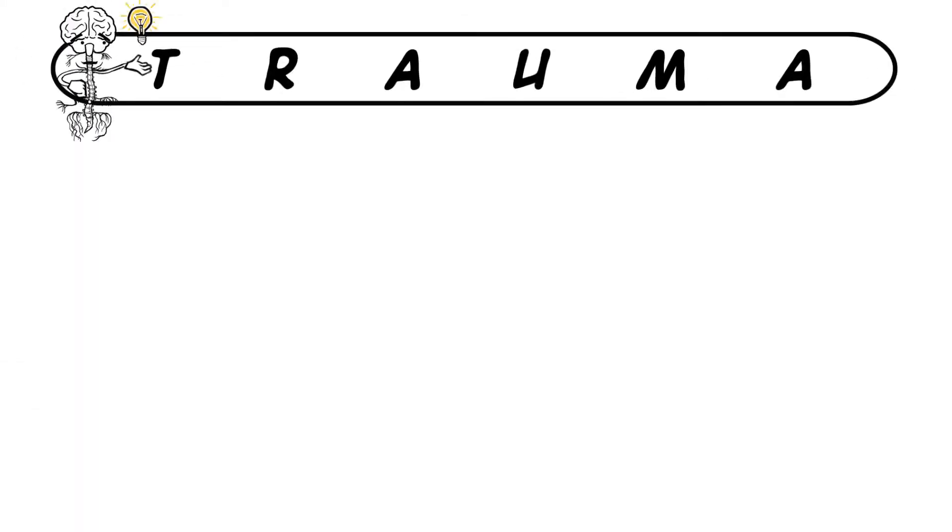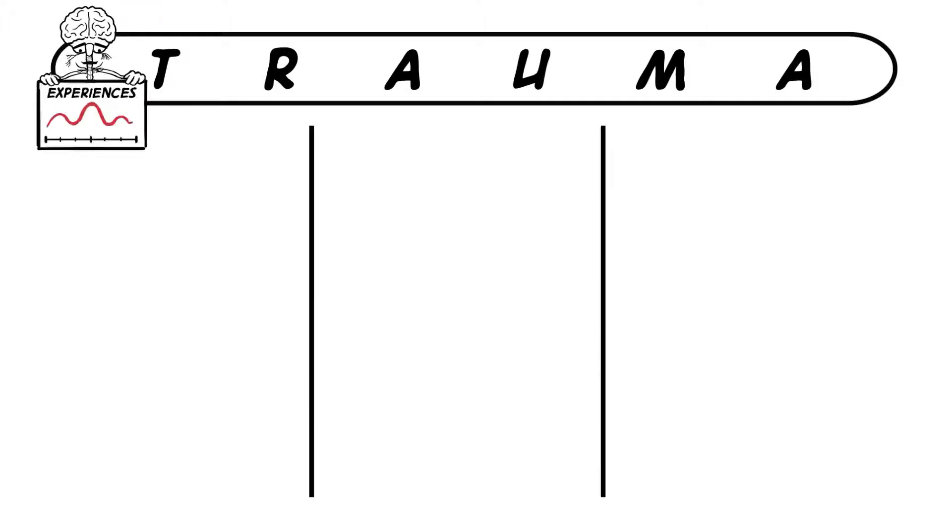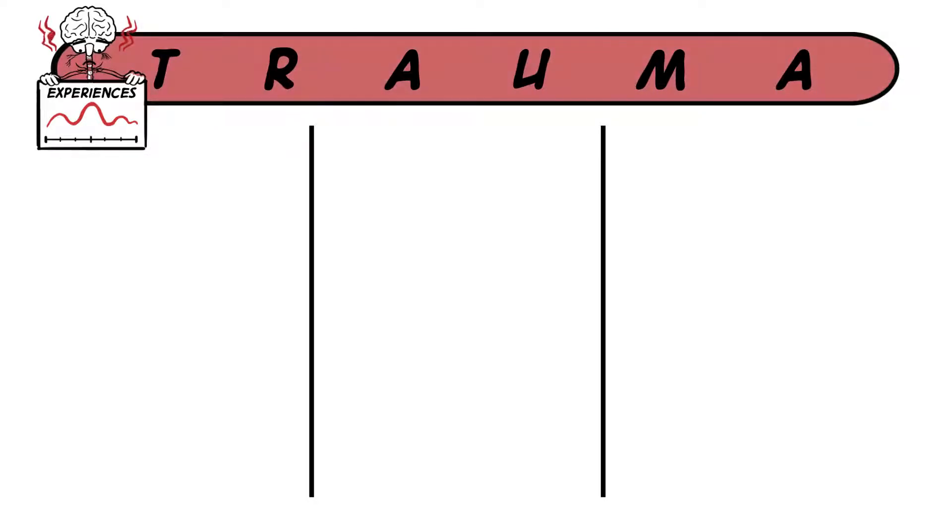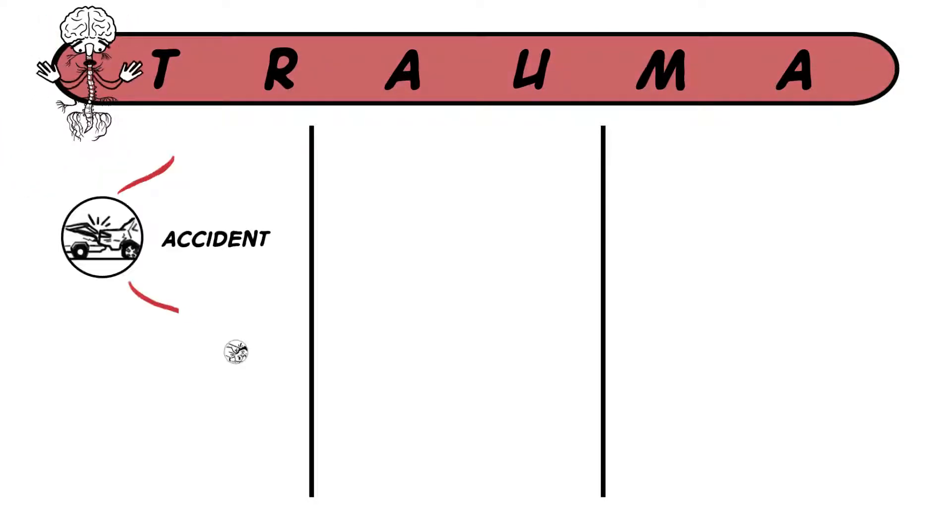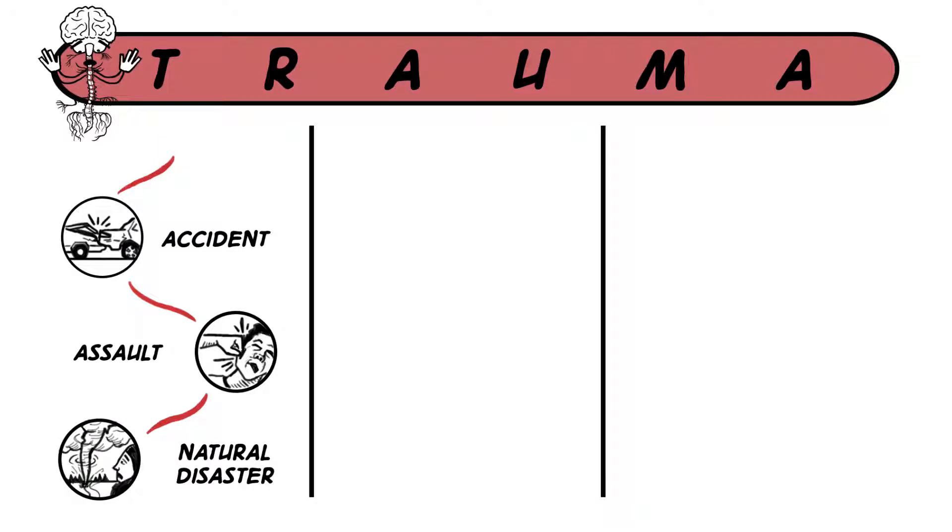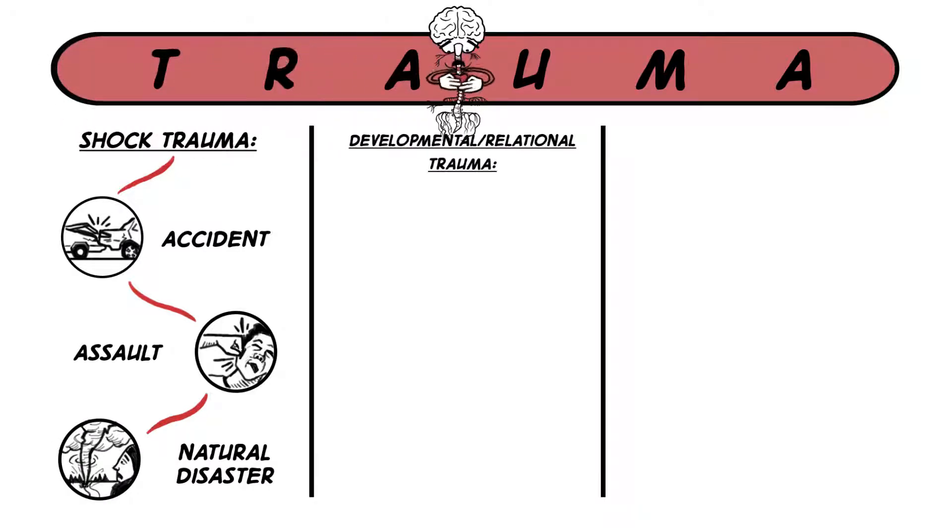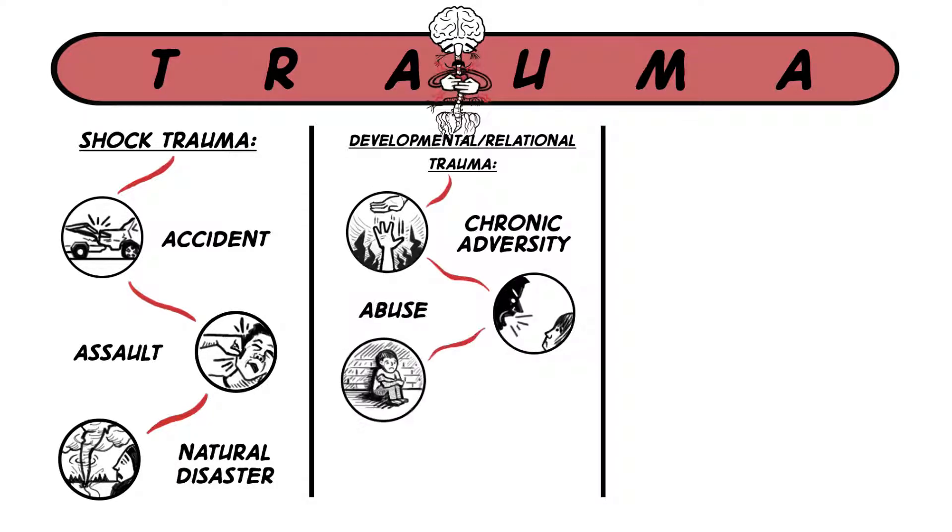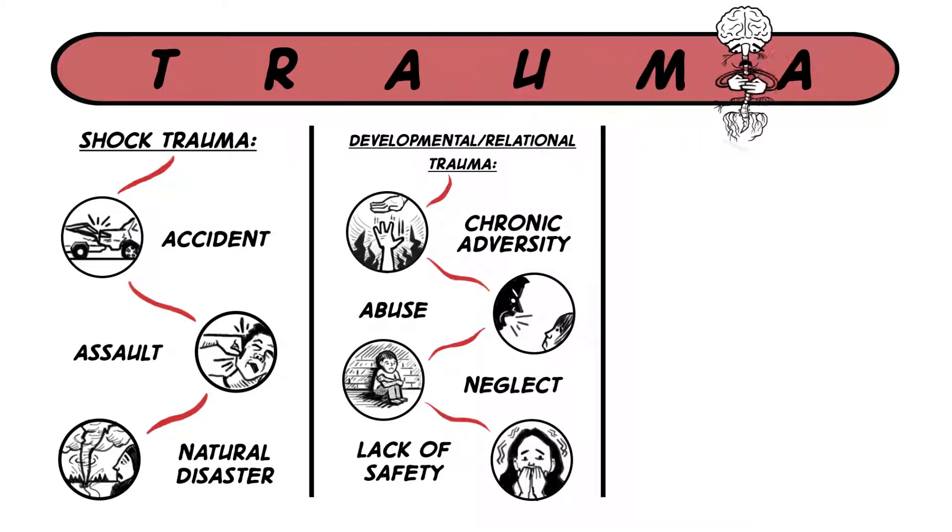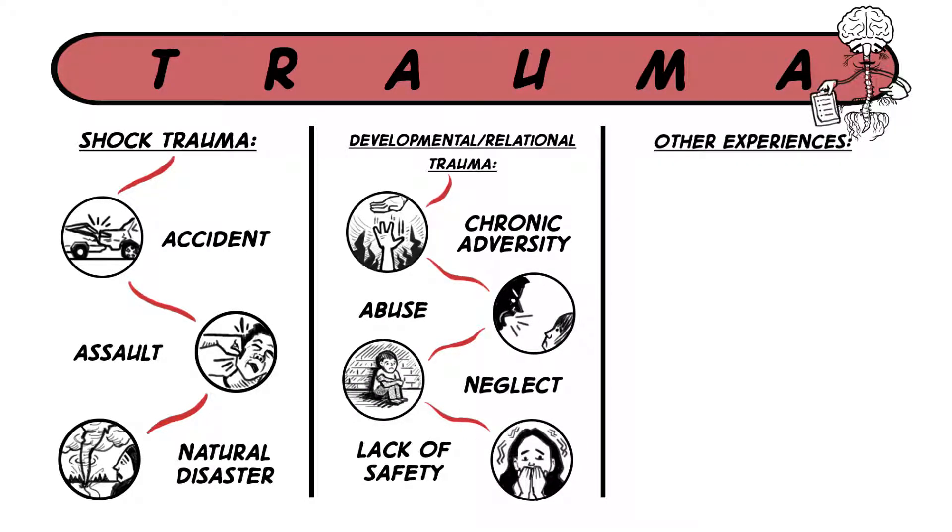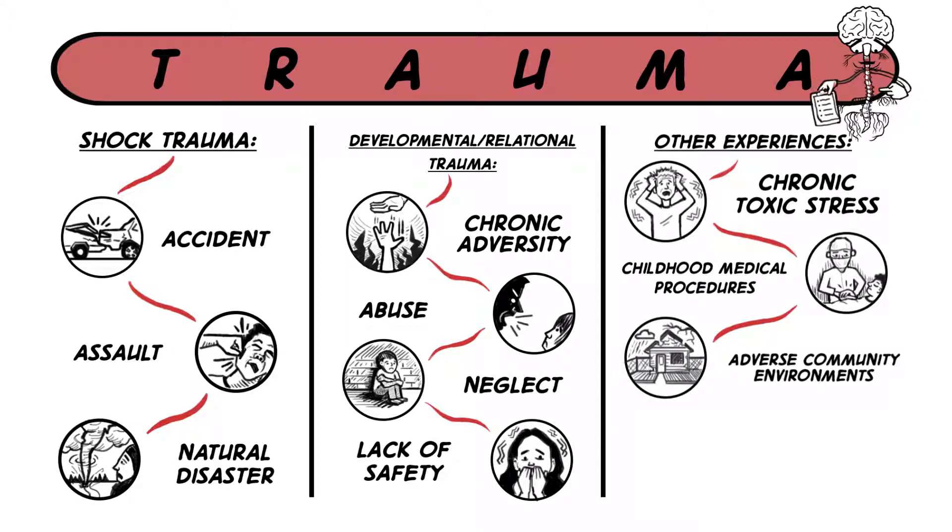Understanding how trauma impacts us is critically important. There is a whole spectrum of experiences that can be traumatizing and adversely impact ANS, like accidents, assaults, and natural disasters, which are often called shock traumas. There is also developmental or relational trauma, when we experience chronic adversity, abuse, neglect, and lack of safety while growing up. Many other experiences can be traumatizing, including chronic stress, medical procedures, and adverse community environments, like poverty, discrimination, and violence.